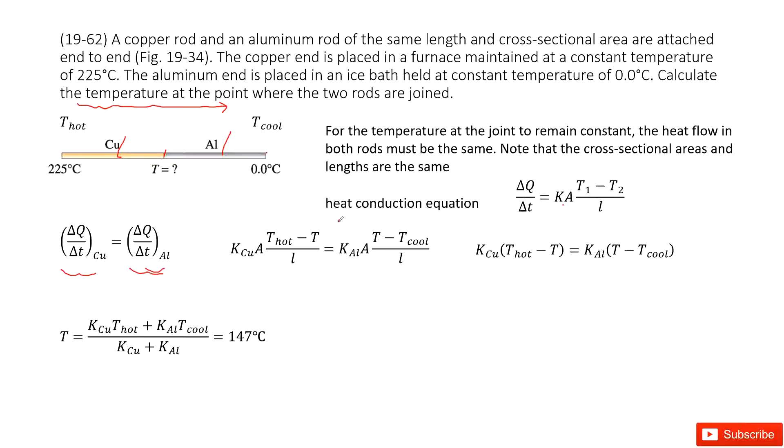We can replace delta Q over delta T with the function we write there. For the copper part, the constant depends on the material copper, and A is the same. T1 is T hot minus T (at the middle point), divided by L. On the right-hand side, this is aluminum, another material. A is the cross-sectional area. The energy flows from there, T minus T cool divided by L.